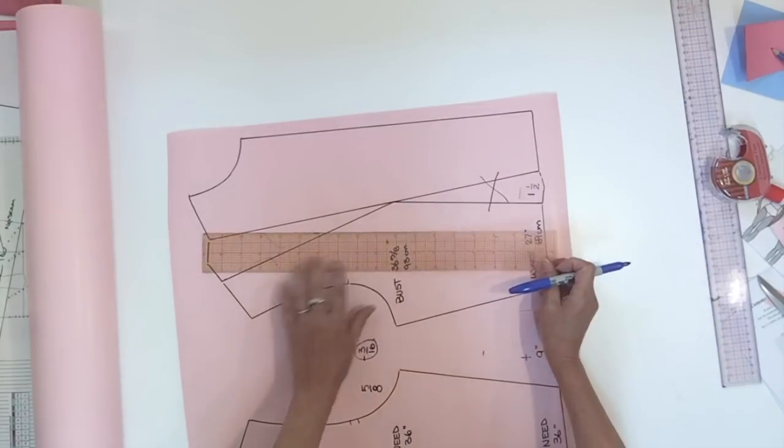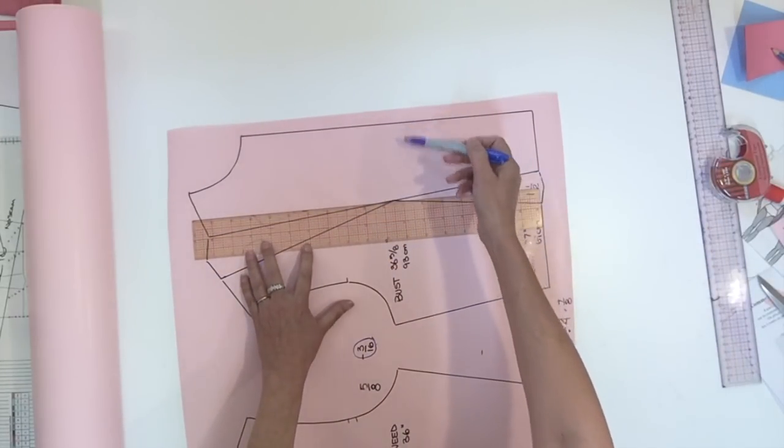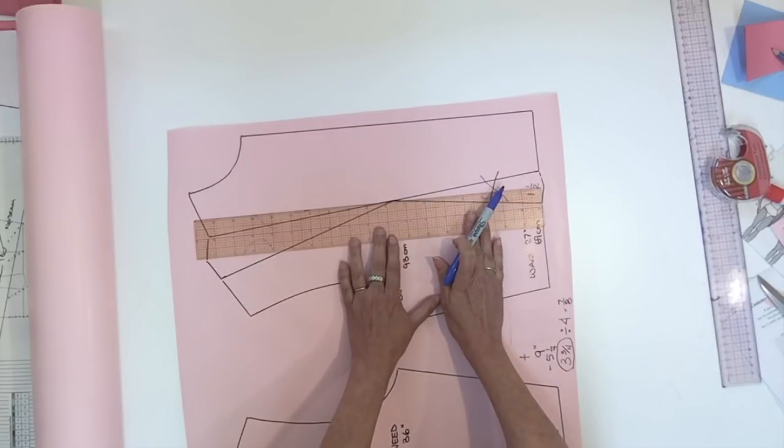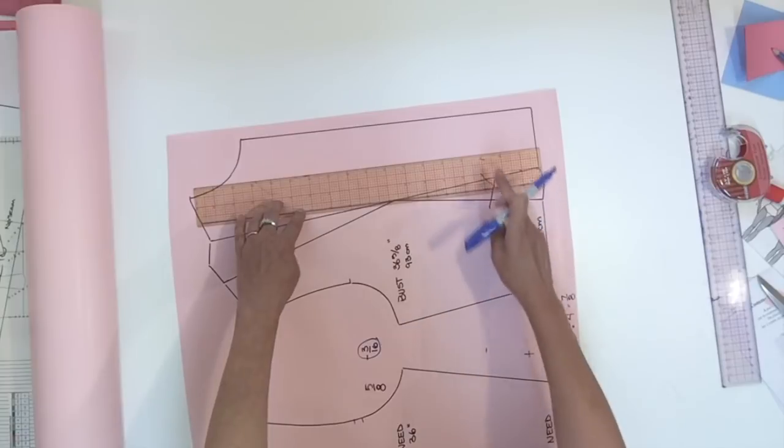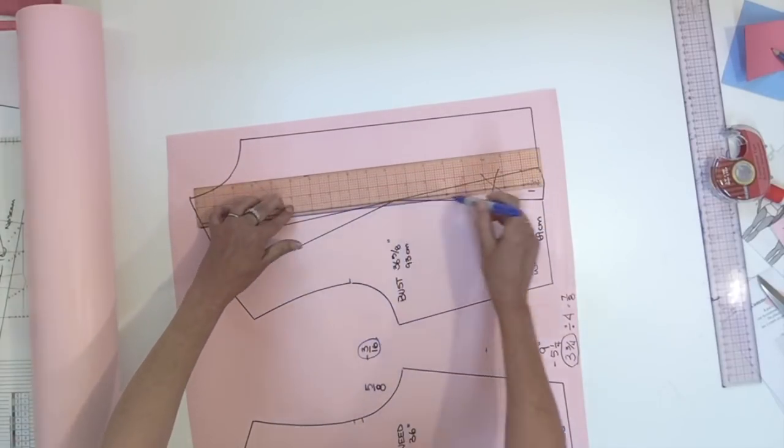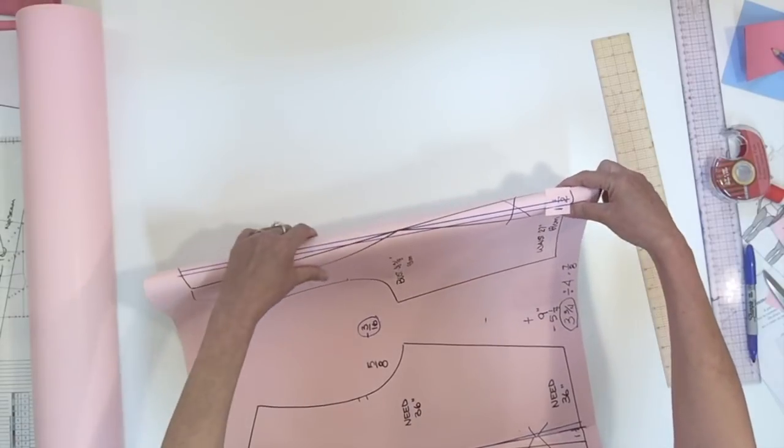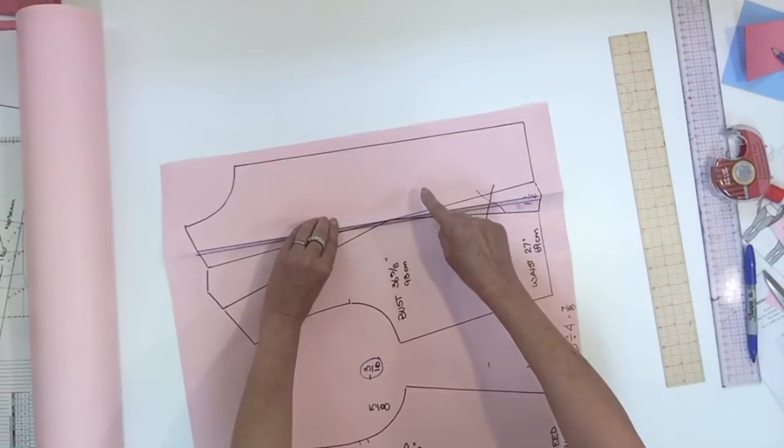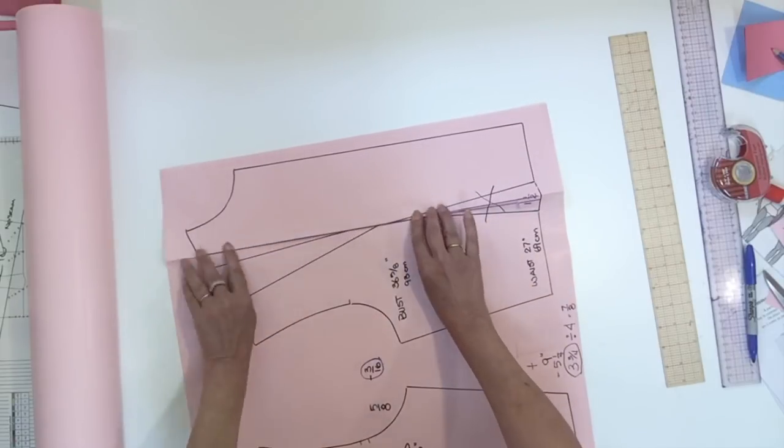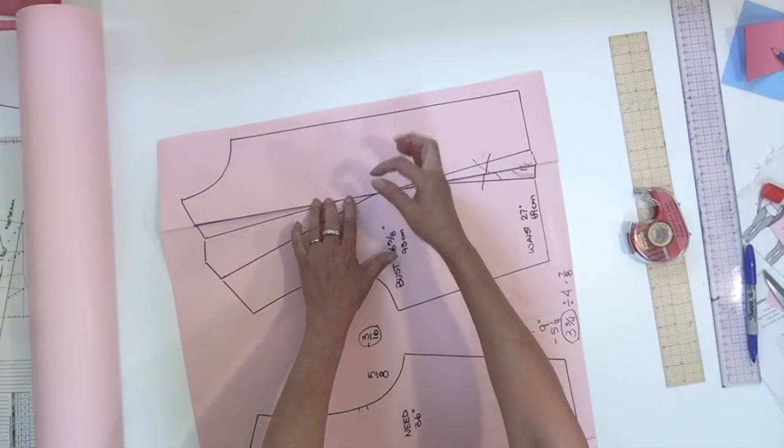Now let's do the same thing on the front. So you trace your line parallel to the front passing by the pivot of the dart. Then a second one 3/16 further. Fold on the first line. Bring the first one over to the second one. And just glue it in position.